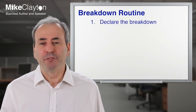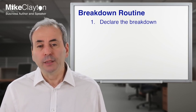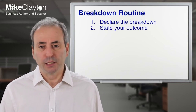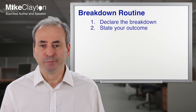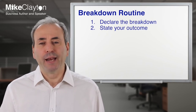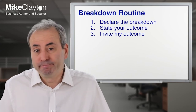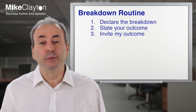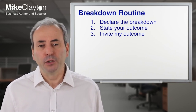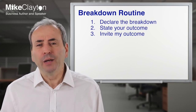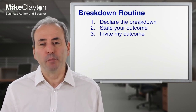Step one is to declare the breakdown — confront the other person by saying 'our relationship has broken down and I want to fix it.' Step two is to state your outcome: it may simply be 'I want to repair this relationship,' or something more nuanced like 'I'd like to get back to the point where we can work together.' Step three is to invite their outcome — ask what they would like. If the answer is 'I don't ever want to talk to you again' the routine won't apply, but hopefully by being honest they'll reciprocate. If there is an overlap between both outcomes, there is a basis for rebuilding the relationship.